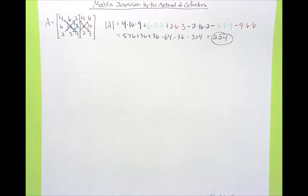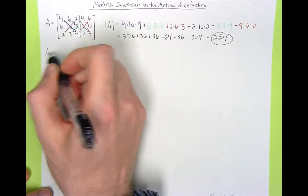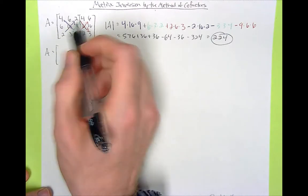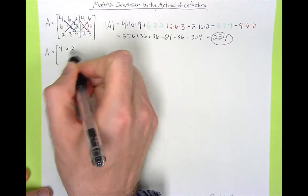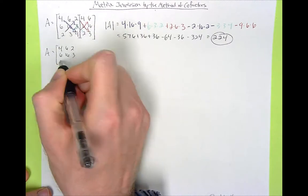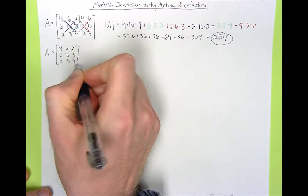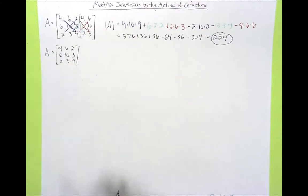So because the determinant does not equal 0, we know that there is an inverse. Now I'm just going to write A here again to remind us, because it's kind of scribbled out there. It's 4, 6, 2, 6, 16, 3, 2, 3, 9. I need it written clearly so that we can calculate the matrix of cofactors, which we will call C.